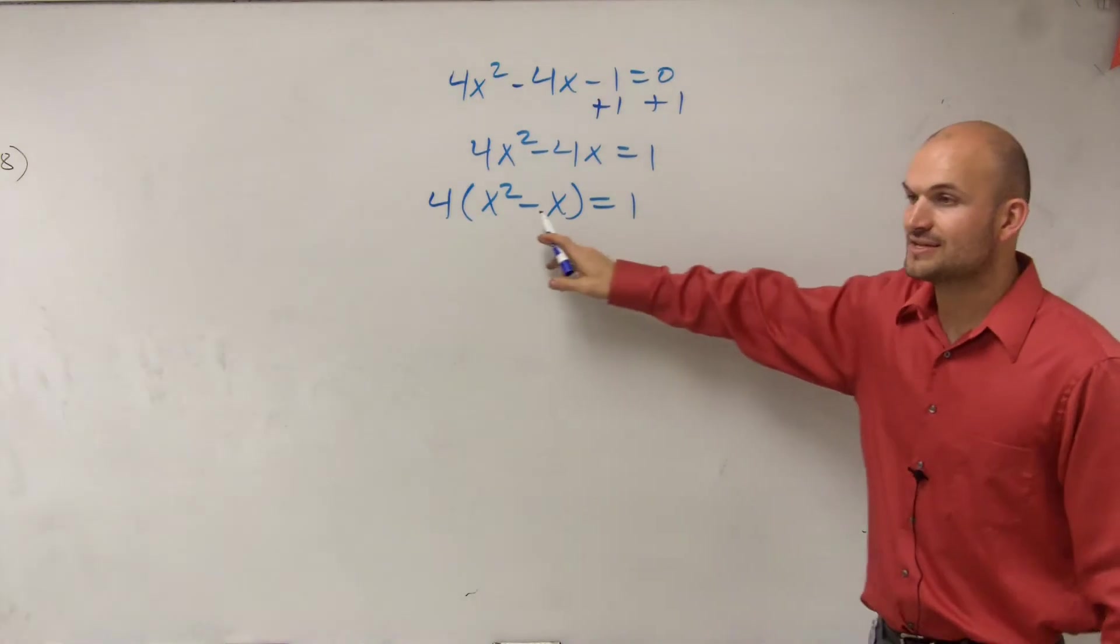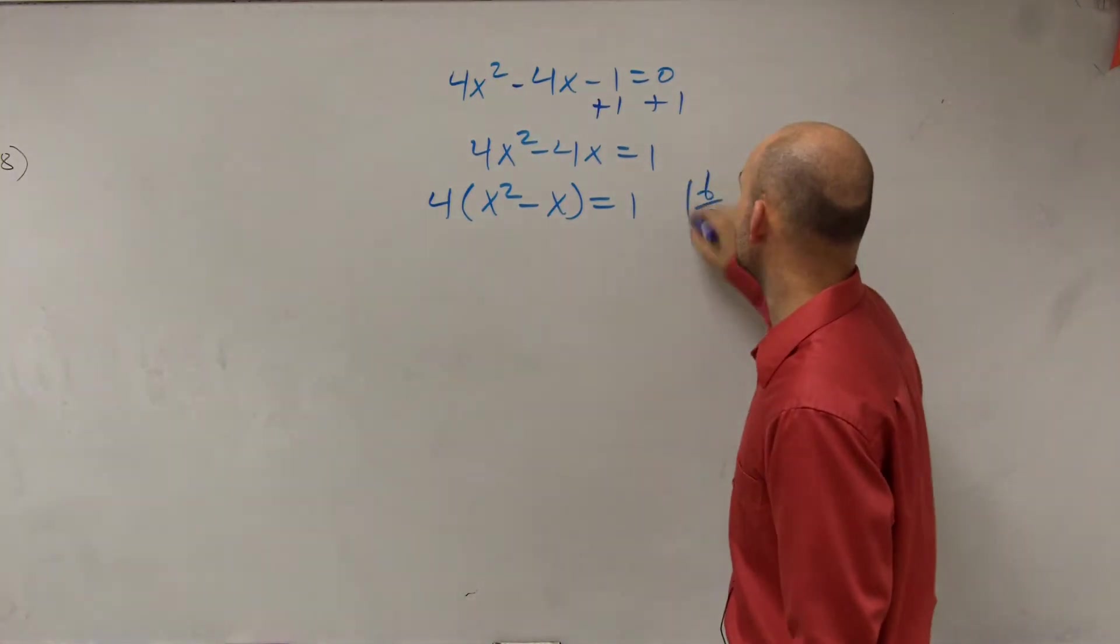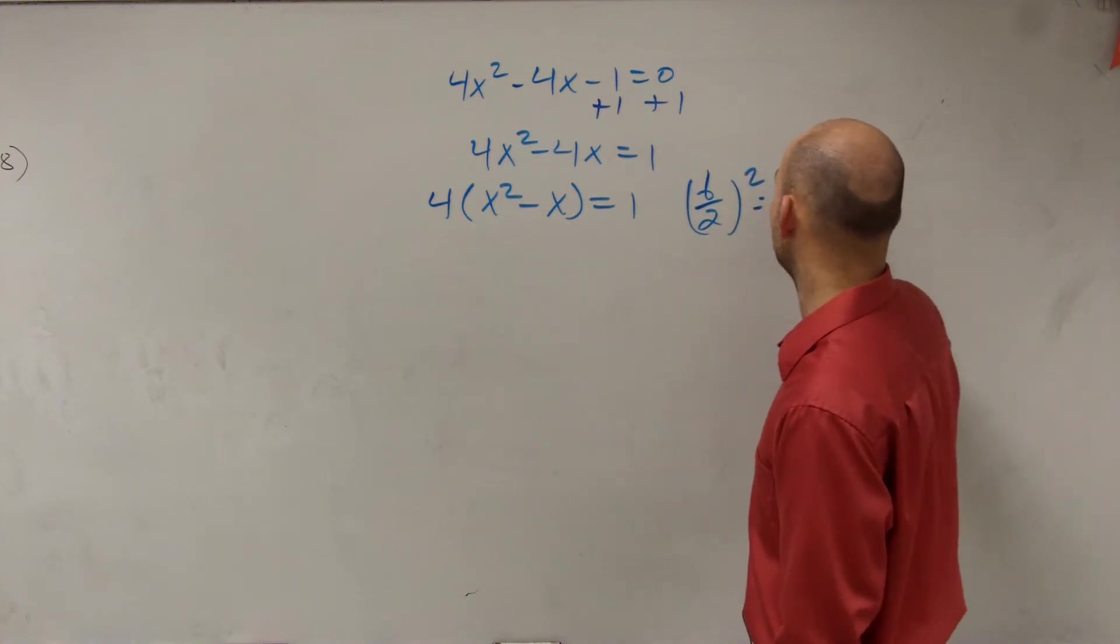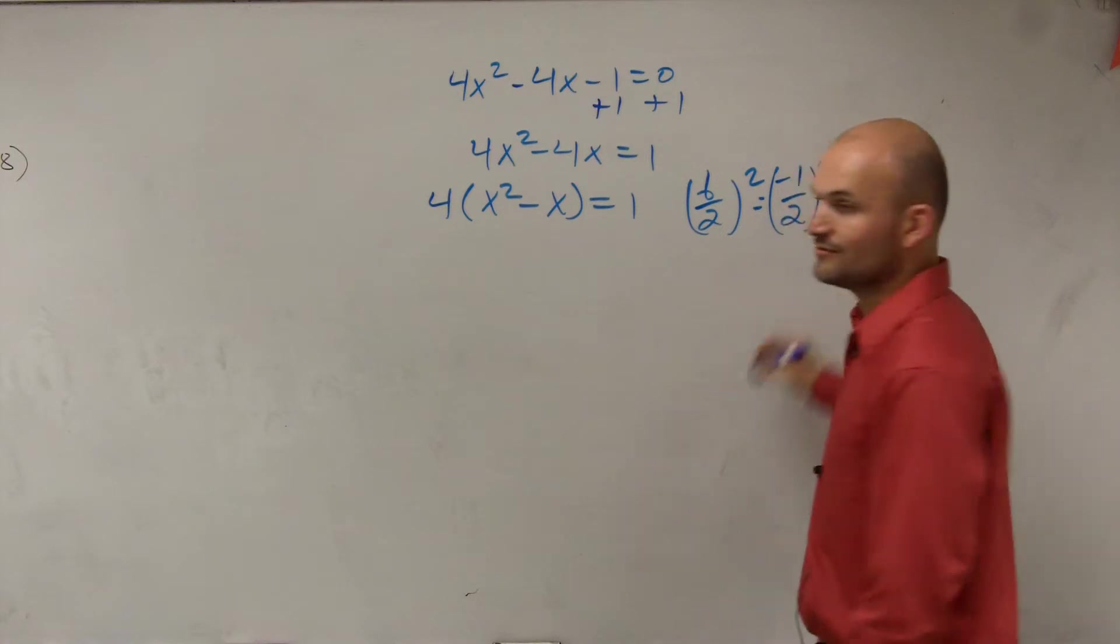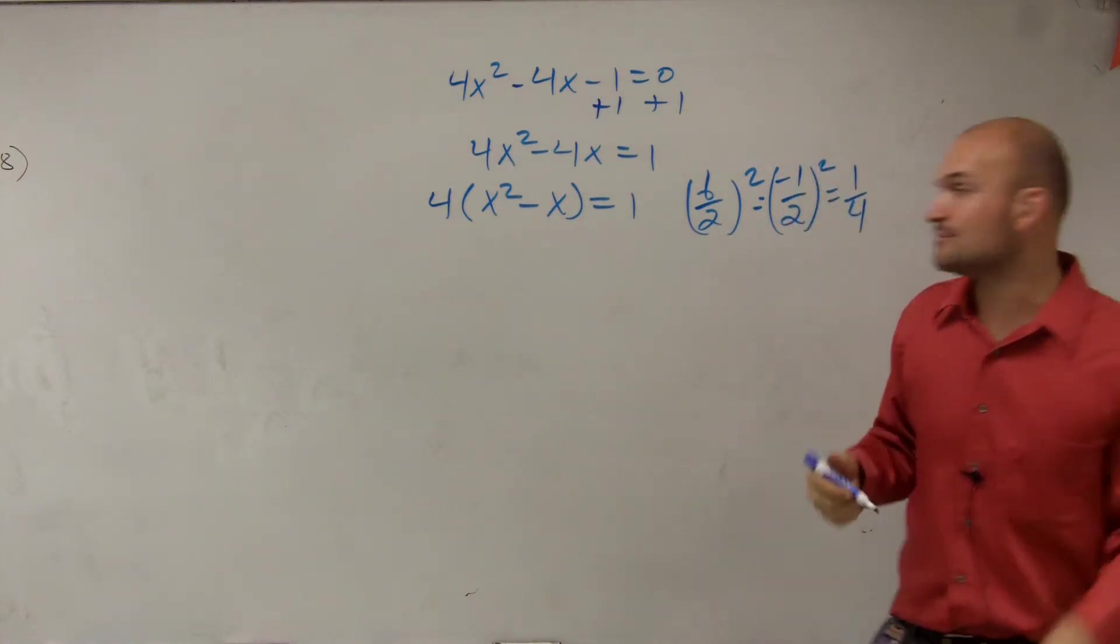Now that we have this out, now what we do is we take, remember, b divided by 2 and square it. So that's going to equal negative 1 divided by 2 squared, which equals a positive 1 fourth. So remember, now we take that value and we add it onto both sides.